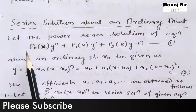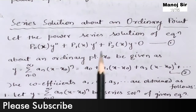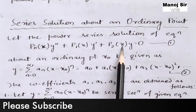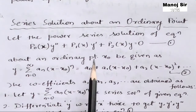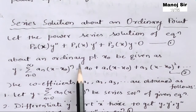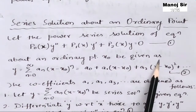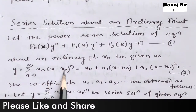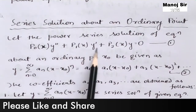Let us start. The power series solution of the equation p0(x) y'' + p1(x) y' + p2(x) y = 0 about an ordinary point x0 — where x0 is an ordinary point given in the problem — is given by y = summation from n=0 to infinity of a_n times (x − x0)^n.